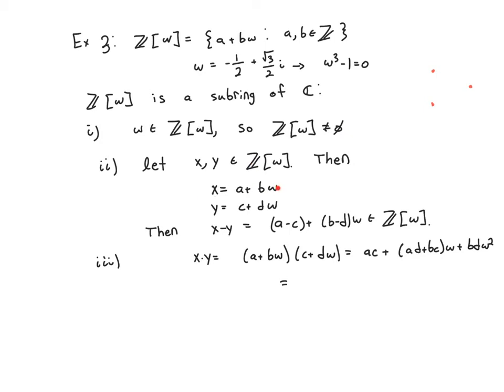Let's let X and Y be in Z[omega]. Then X is equal to A plus B omega, and Y is equal to C plus D omega. It's not too hard to collect like terms and see that X minus Y can be written as A minus C plus B minus D times omega. So the difference of two numbers in this form can also be written in this form.